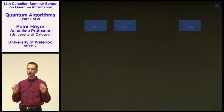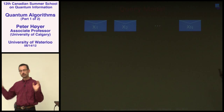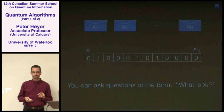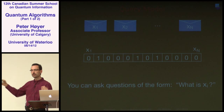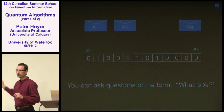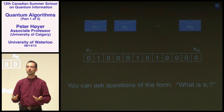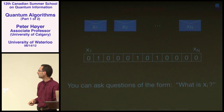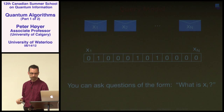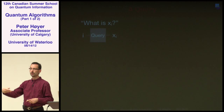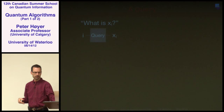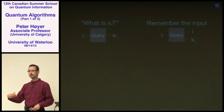Here's the model of computation we are going to discuss. Imagine you have n envelopes, one through n, called x1 through xn, and each envelope contains a bit. We can think of this as a bit string of n bits. We can ask queries to an oracle: what's in envelope number i? For instance, if I ask what is in envelope number three, I get zero. We call this a query.